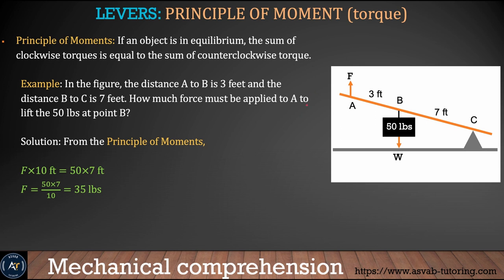Here is an example problem. You can see the fulcrum, and a 50-pound load is applied at point B. The distance from C to B is 7 feet and B to F is 3 feet. So F times 10 feet equals 50 times 7, which gives you F equals 35 pounds. That means if you have a 50-pound load and use the fulcrum, you actually need only 35 pounds to lift it, giving you a mechanical advantage.